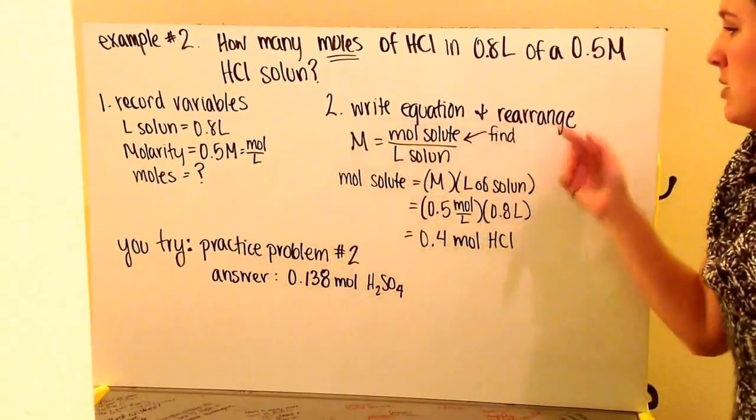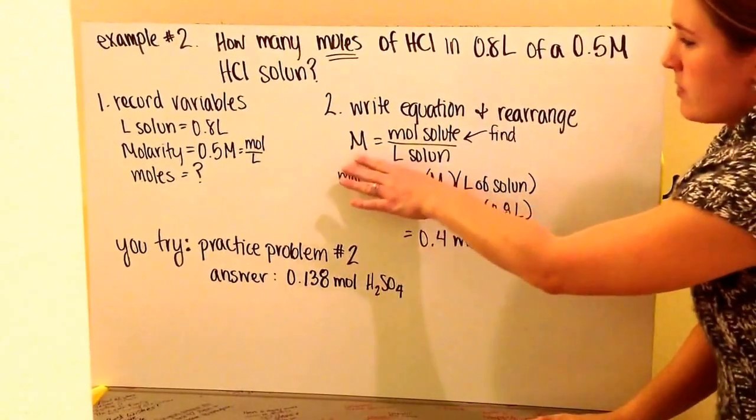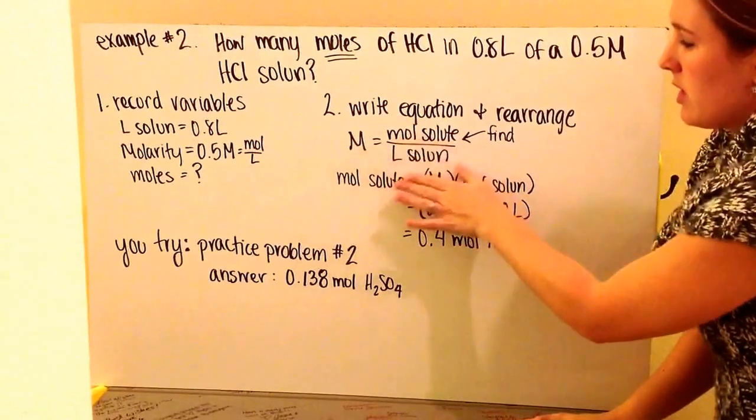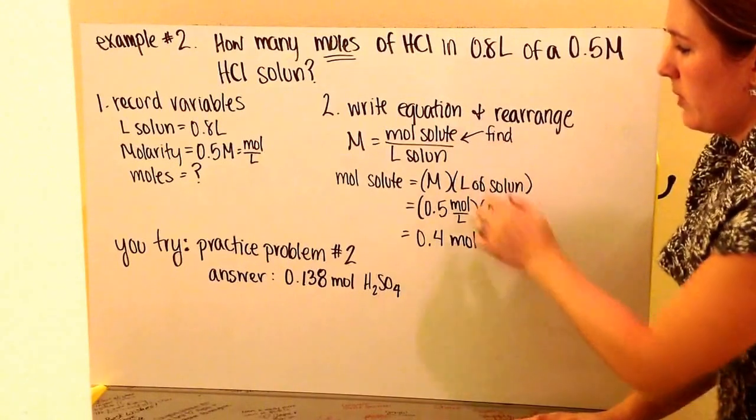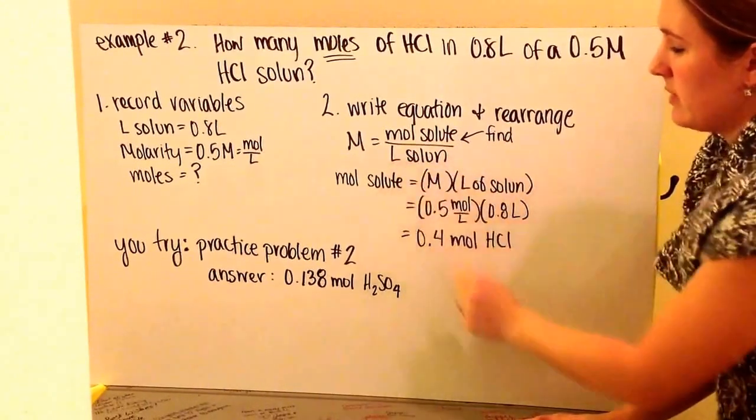Next, we're going to write out our equation and rearrange. We have molarity as moles of solute divided by liters of solution, and we want to find our moles of solute. We rearrange it by multiplying both sides by liters of solution.